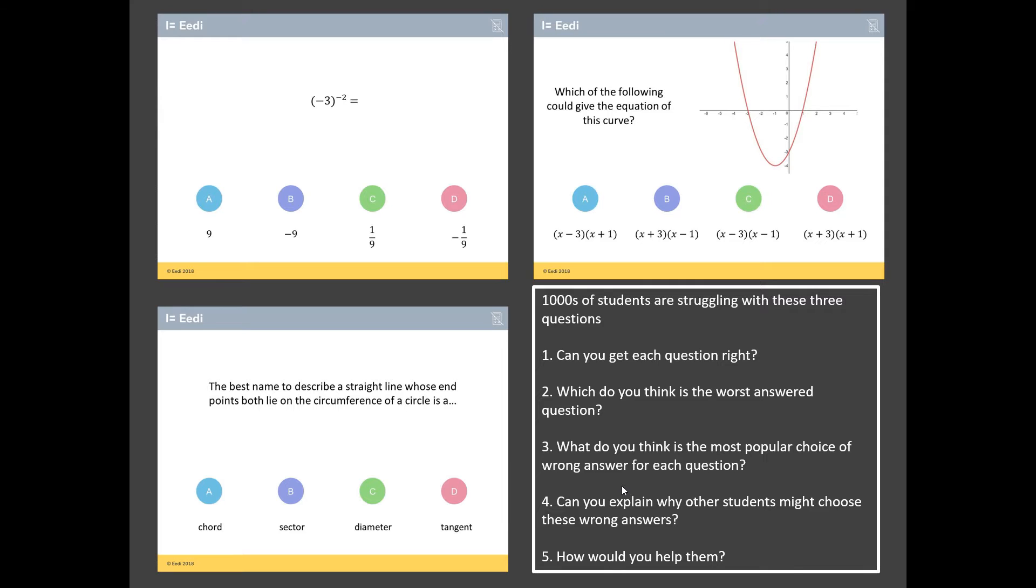And then it gets tricky. Can you explain why other students may choose these popular wrong answers? And then finally, and probably the hardest challenge of all, imagine you're sat next to somebody who's absolutely convinced that their wrong answer is in fact correct. How would you help convince them not only that you're right, but in a nice way that they're wrong?